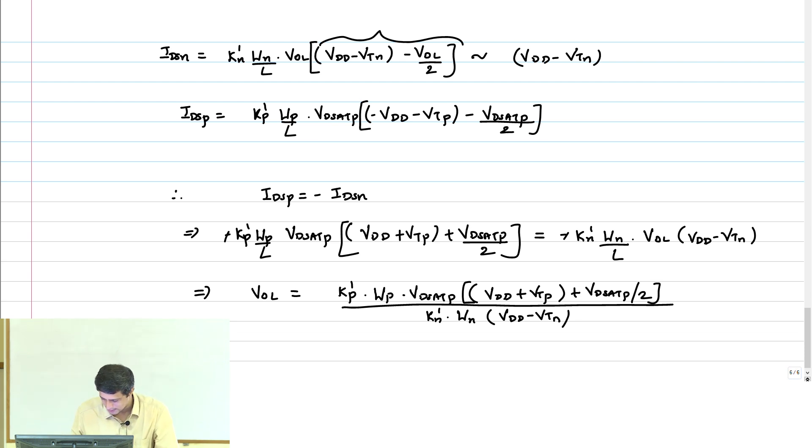Which implies now let us make some simplifications. Suppose this VDD plus VTP plus VDSATP by 2, suppose the VT and VDSATs were such that these terms cancelled out. Then it implies VOL is simply KP prime WP by KN prime WN into VDSATP. This is the first order thing, but of course you do not have to make this approximation, I am just trying to bring this out.